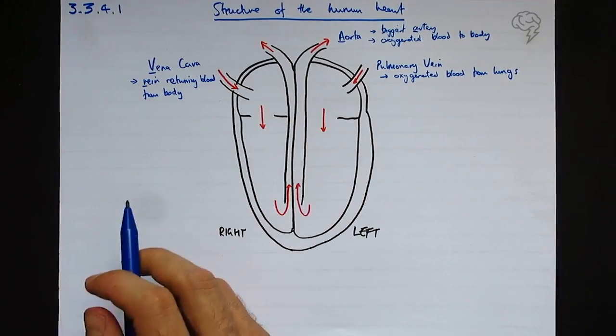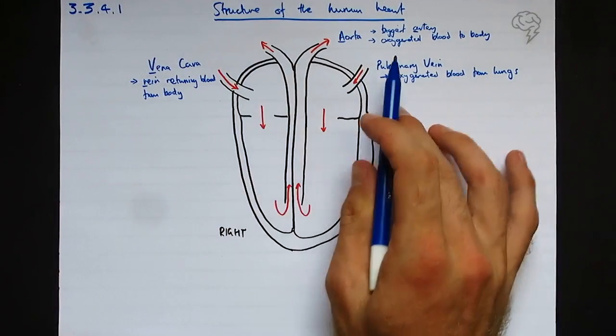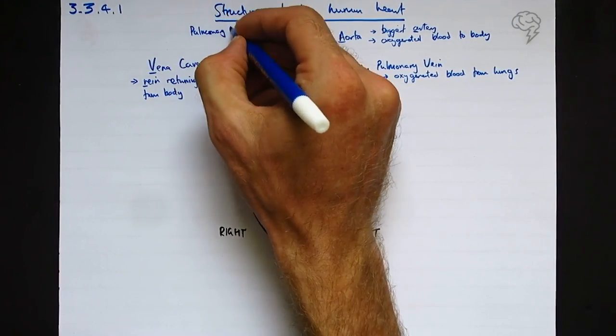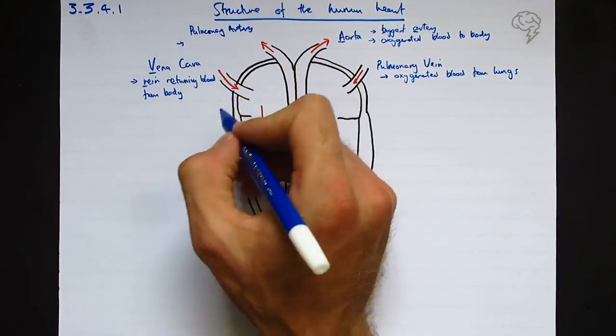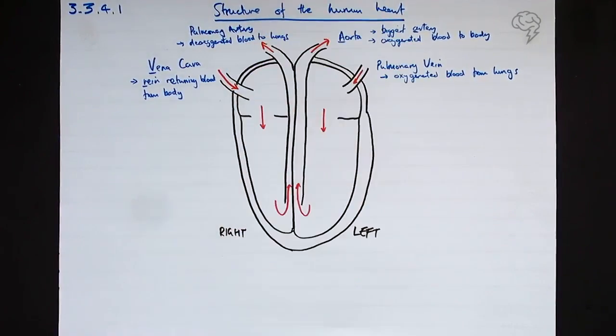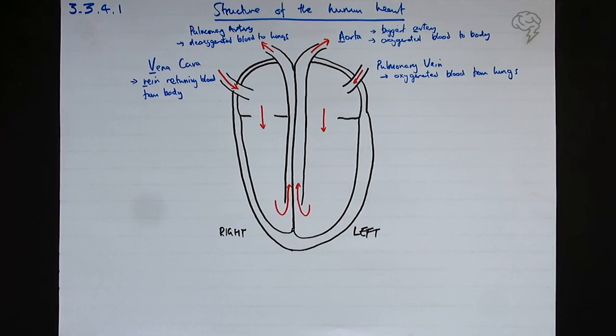The last one going towards the lungs to complete the circuit - it's pulmonary, it's going away from the heart so it's an artery. It's the pulmonary artery with deoxygenated blood. I should maybe say deoxygenated blood to the lungs. So they're the major blood vessels, we've got our direction of flow.